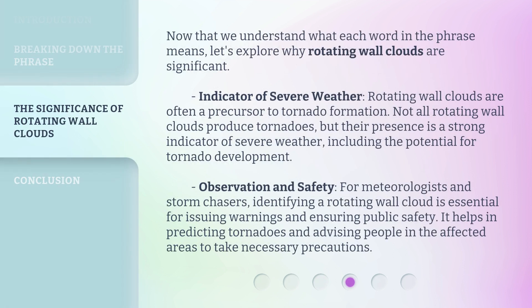Now that we understand what each word in the phrase means, let's explore why rotating wall clouds are significant. Rotating wall clouds are often a precursor to tornado formation. Not all rotating wall clouds produce tornadoes, but their presence is a strong indicator of severe weather, including the potential for tornado development.